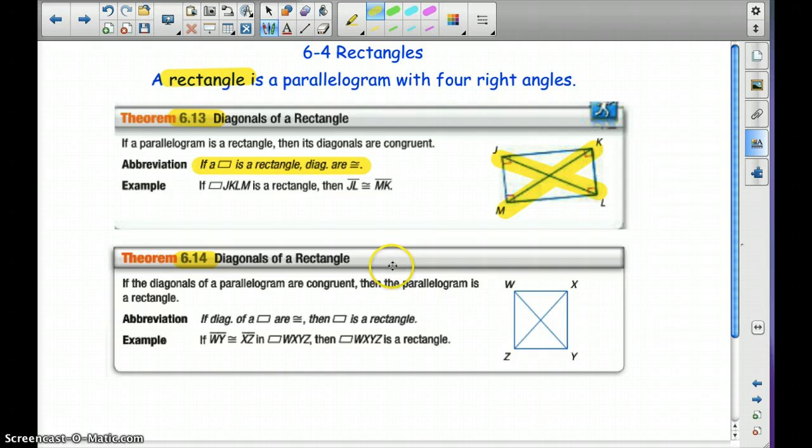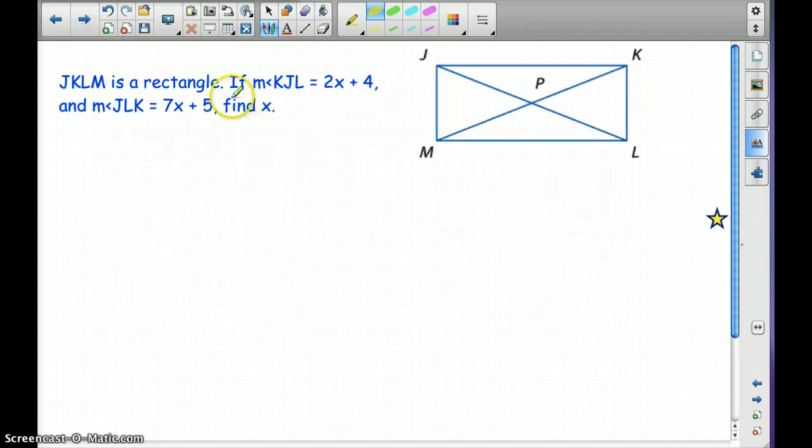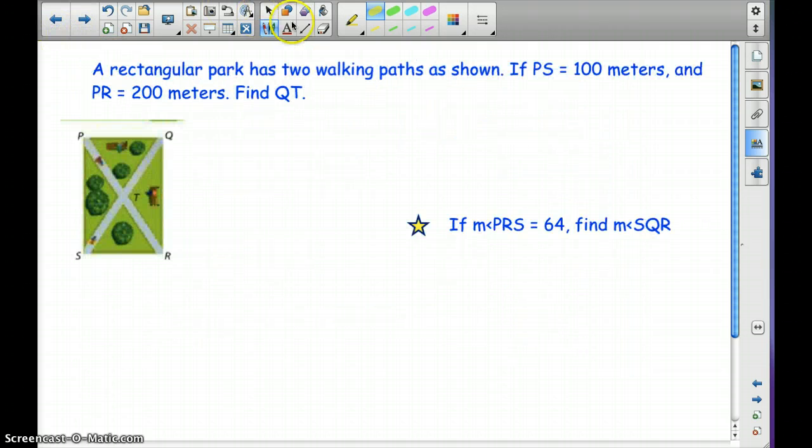6.14 is if the diagonals of a parallelogram are congruent, then the parallelogram is a rectangle. So it's the converse of 6.13. If we find out that these are congruent, then we can call this whole parallelogram a rectangle. So pause and write these down. Okay, let's look at this first example.